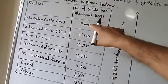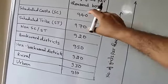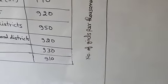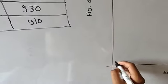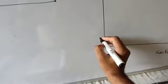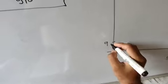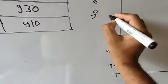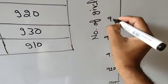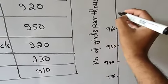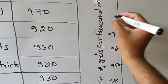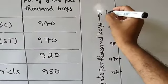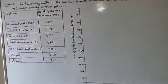Now take the unit and scale. On the y-axis, all the data values are greater than 900 and less than 1000. If you start from 100, 200, 300, 400 it will take too much space. So start from 910, then 920, 930, 940, 950, 960, 970, 980, 990, and 1000.